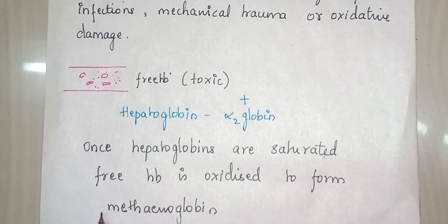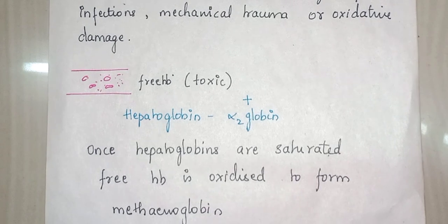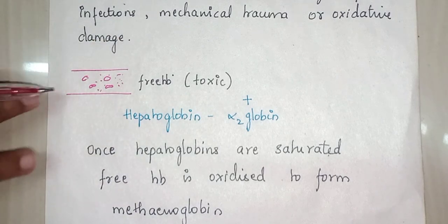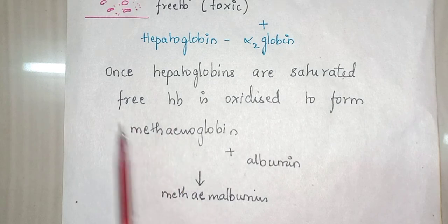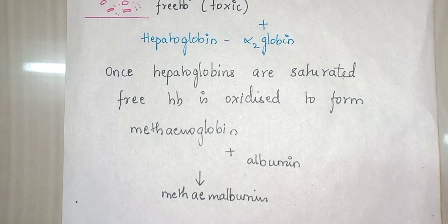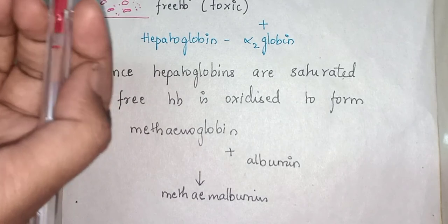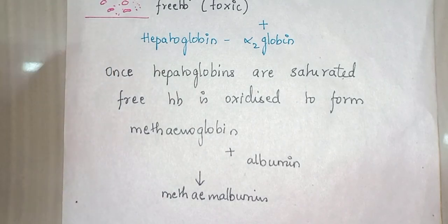Once all the haptoglobins are saturated, free hemoglobin is oxidized to form methemoglobin. The albumins in our blood then mix with the methemoglobin and form a compound called methemalbumin. In our coming chapters I will be explaining in detail about all the major hemolytic anemias, going through each one by one.